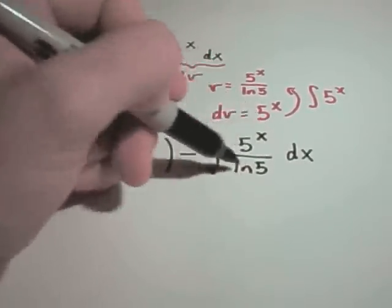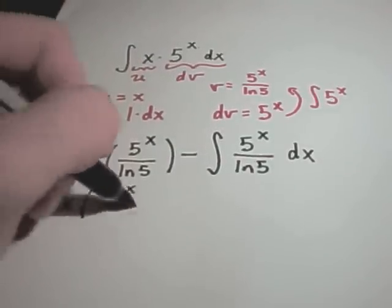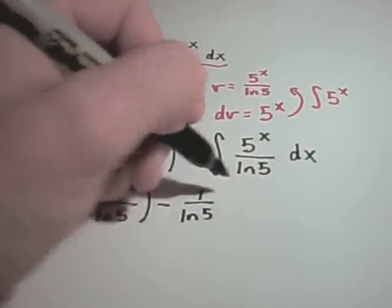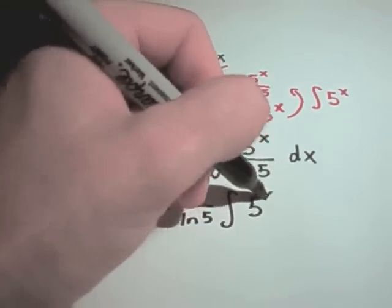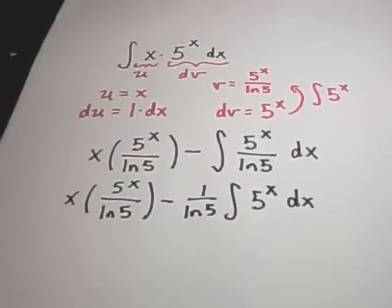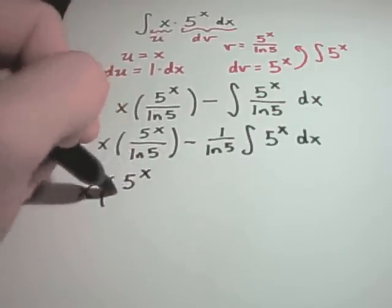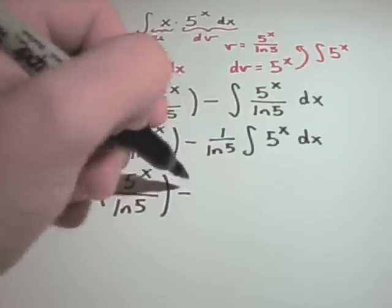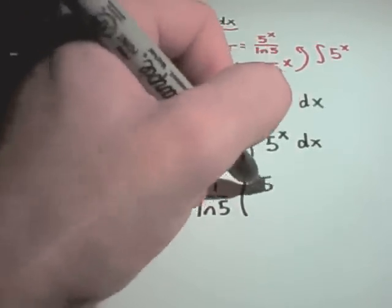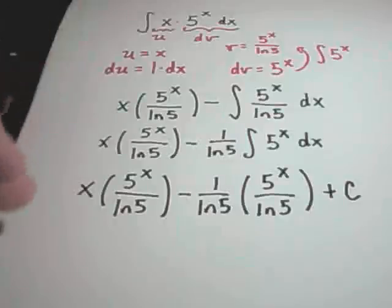Again, I have to ask myself, is this new part better than what I started with? And, yeah, I think definitely it is. I can just pull out the ln of 5. That's just a constant. Now I'm just left integrating 5 to the x dx again, which I actually already integrated to get my v term in the first place. So, it says you'll have x times 5 to the x over ln of 5 minus 1 over ln of 5. If you integrate 5 to the x, again, you get 5 to the x over ln of 5. We tag on our plus c.